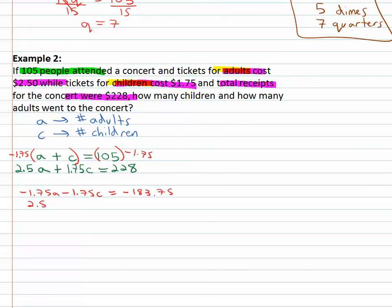And then the adults are 2.5 in the second equation plus 1.75c equals 228. And we're ready to add those together because the children will subtract out. And we get 1.75 and 2.5 is going to give us 0.75a equals 228 minus 183.75, 44.25. Quickly get a alone by dividing by 0.75 and a the number of adults is 59.